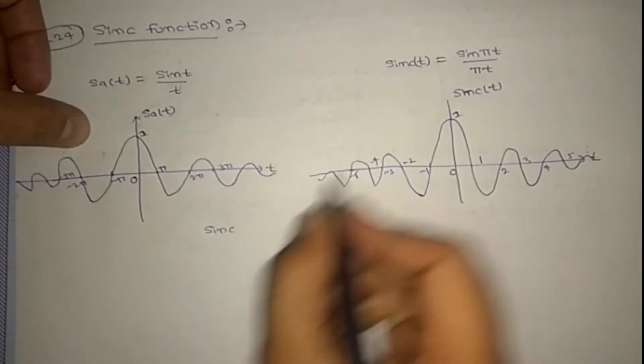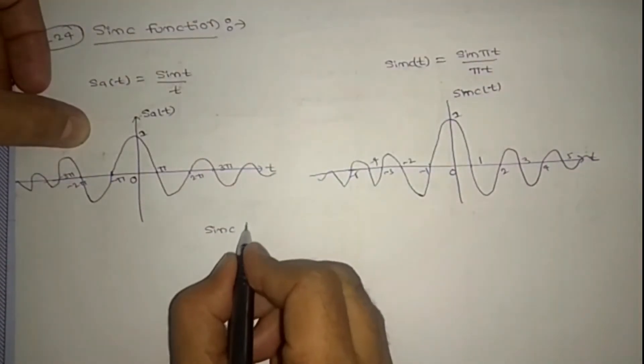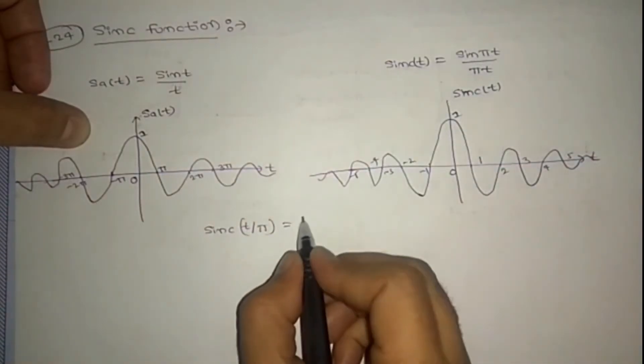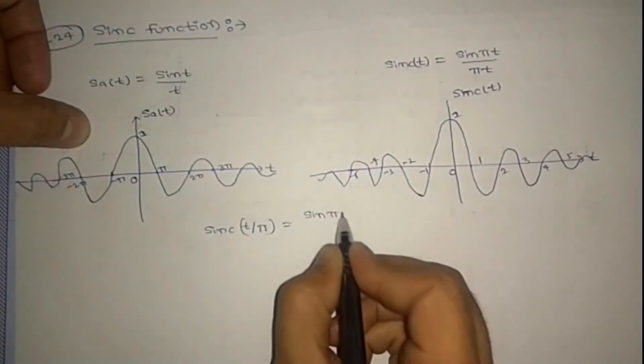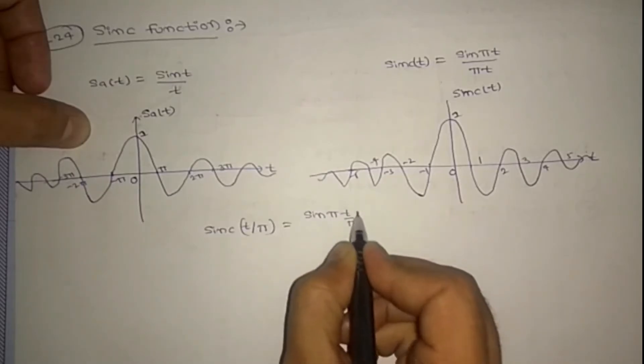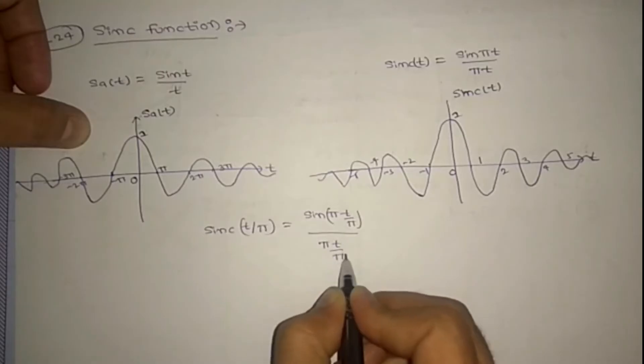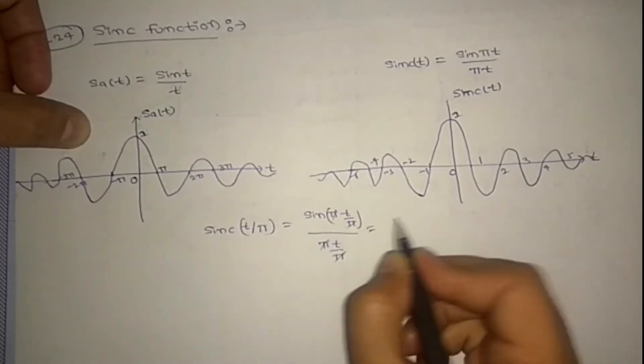Sinc, here, wherever the t is there, I will replace t by pi. So what will come here? Sin pi, here t by pi, and here pi, here also t by pi. Pi by pi, pi get cancelled out. So what will come? Sinc t by t.